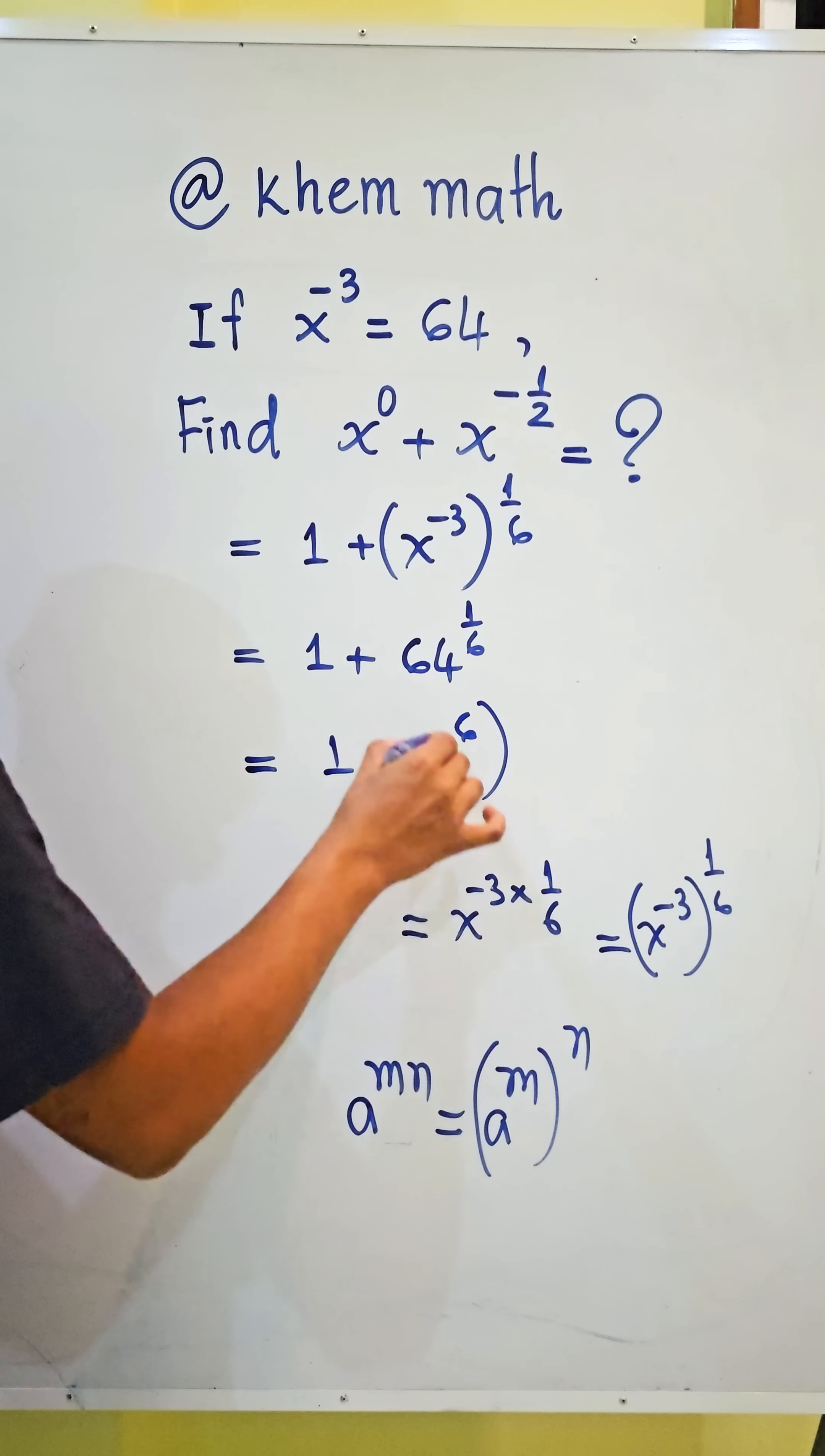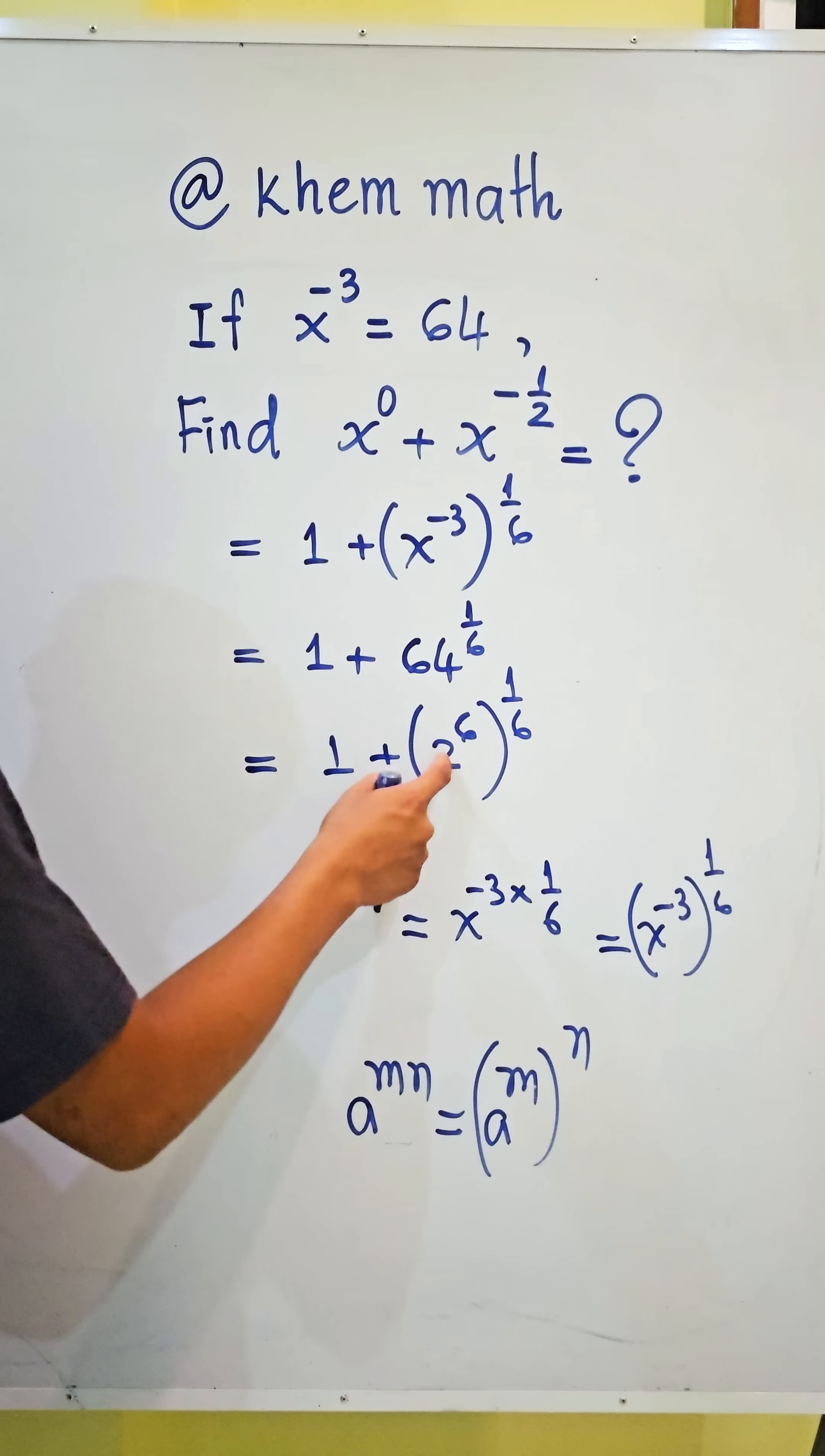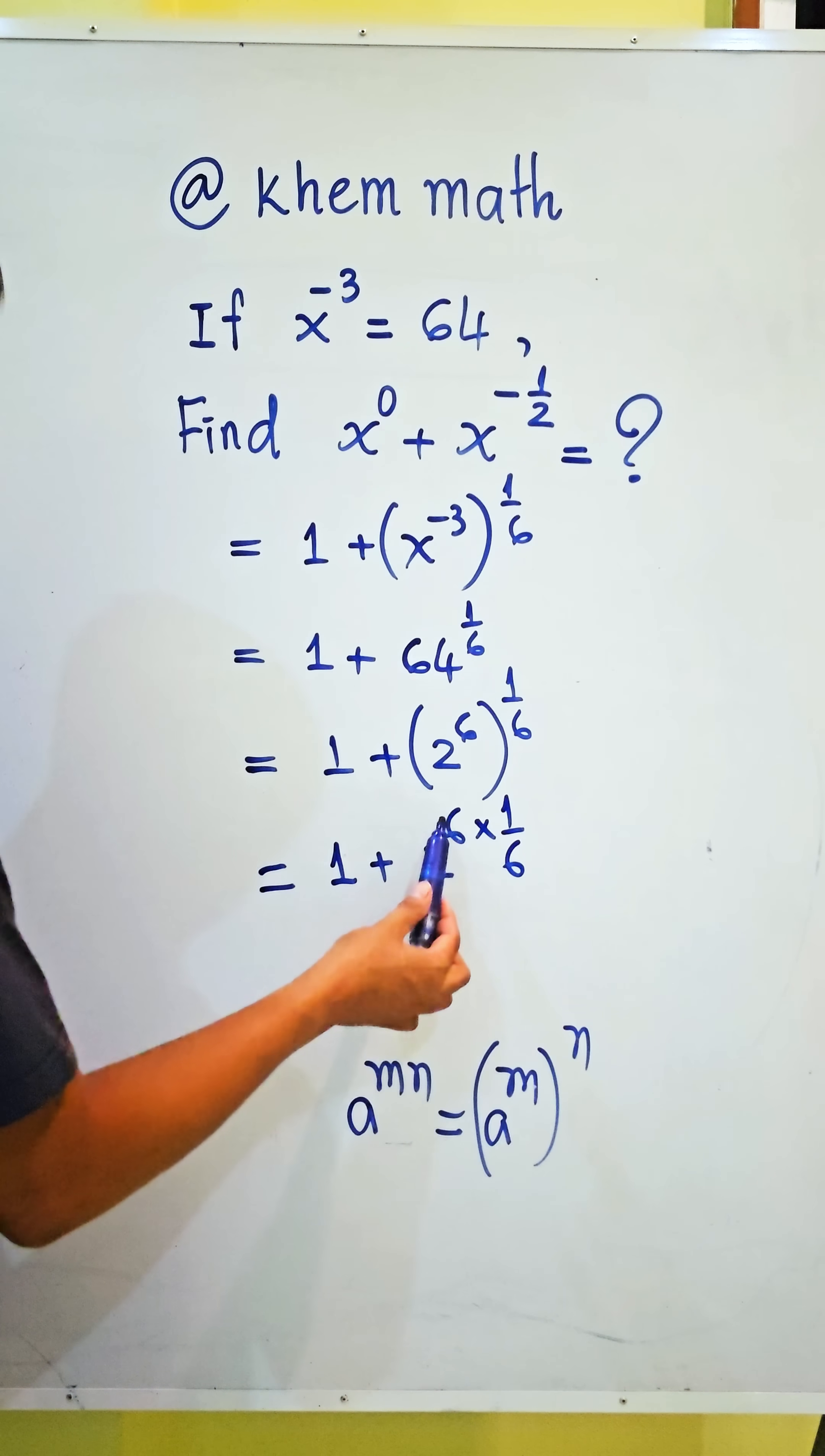Power 6 all power 1 divided by 6. We use the formula, we get 1 plus 2 power 6 times 1 divided by 6. We simplify the 6, we get 1 plus 2 power 1, and 2 power 1 we don't write the 1.